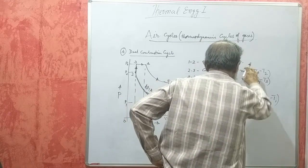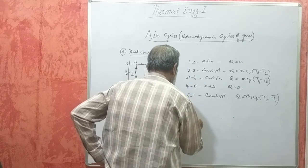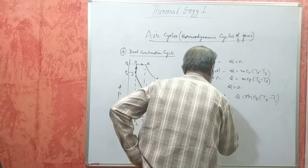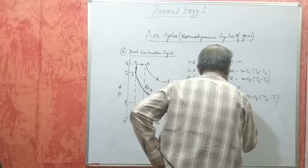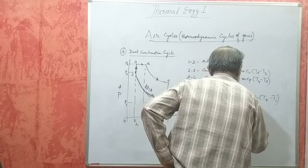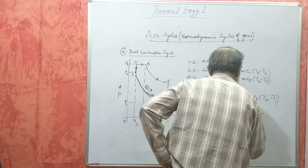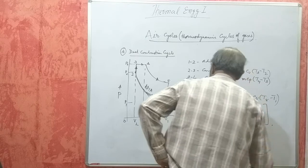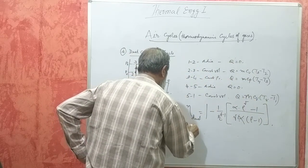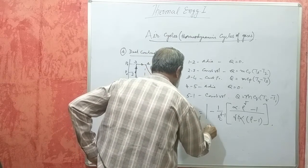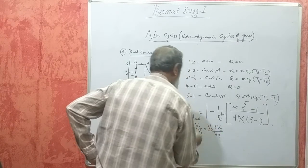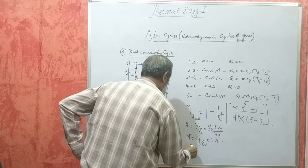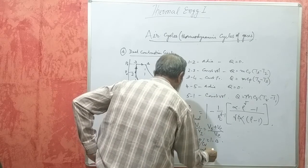Heat absorbed in both processes minus heat rejected, divided by total heat absorbed, gives the air standard efficiency. Simplified, the formula is: 1 minus 1 over R to the power of (gamma minus 1), multiplied by (alpha · rho to the power of gamma minus 1) divided by (gamma · alpha · (rho minus 1) + alpha − 1). R is the compression ratio V1/V2, that is stroke volume plus clearance volume divided by clearance volume. Gamma is Cp/Cv, equal to 1.4.